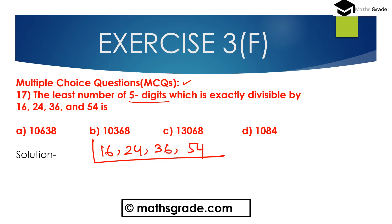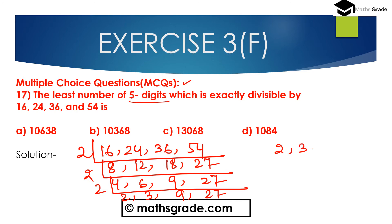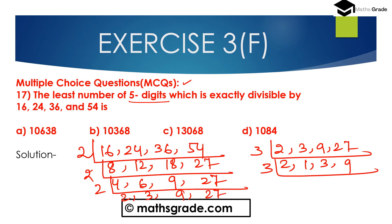Applying the division method for 16, 24, 36 and 54: divide repeatedly by 2 giving 8, 12, 18, 27; then 4, 6, 9, 27; then 2, 3, 9, 27; then 1, 3, 9, 27; then by 3 giving 1, 1, 3, 9; then 1, 1, 1, 3; finally 1, 1, 1, 1. So the LCM is 2 × 2 × 2 × 2 × 3 × 3 × 3, which equals 16 × 27 = 432.